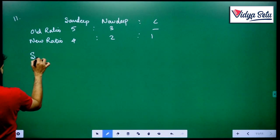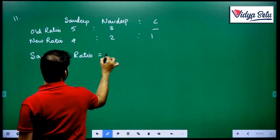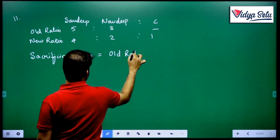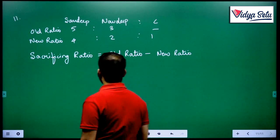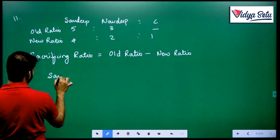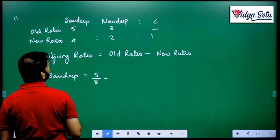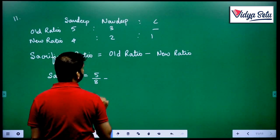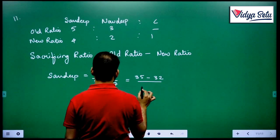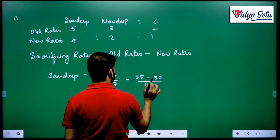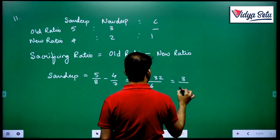Sacrificing ratio is whatever they were having earlier in old ratio minus whatever they now have. For Sandeep, earlier he was having 5 by 8 share, now he is having 4 by 7 (since 4 plus 2 plus 1 equals 7). So 35 minus 32 by 56, total he is sacrificing 3 by 56.